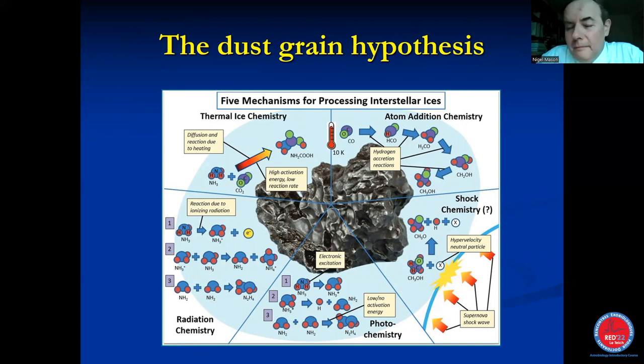This dust ice grain can then be treated to a various amount of energetic processes. So, for example, a star may form and the ultraviolet light from the star may bathe these dust grains in the outer part of the dust cloud with light, UV active light, which is capable of breaking up chemical bonds and triggering chemistry. That's our photochemistry.